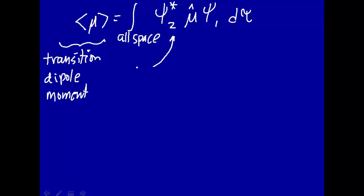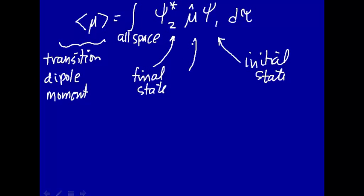This psi 2 is the final state, psi 1 is the initial state, so we're looking for a transition from the initial to final state, and mu is the dipole moment operator.